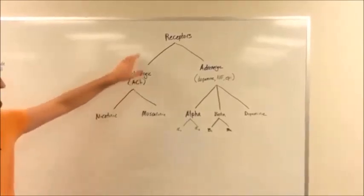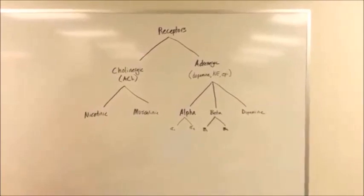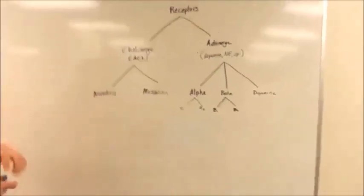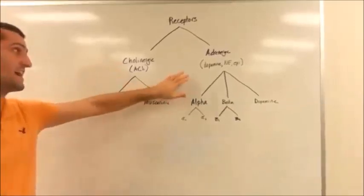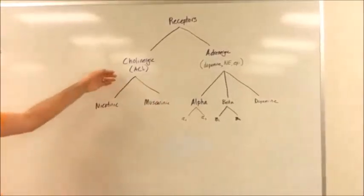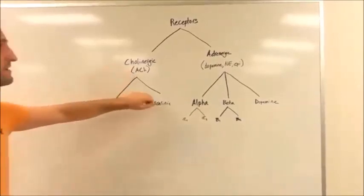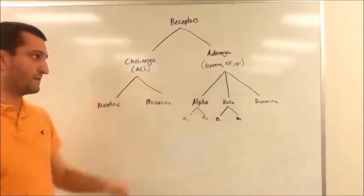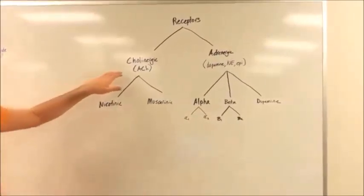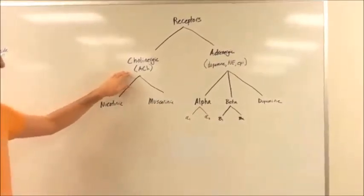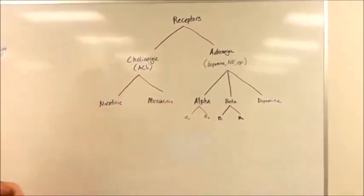Here we're going to talk about the different types of receptors. When we talk about any type of receptor, it's important to know what category it's going to fall into. There are two main categories: the cholinergic receptors and the adrenergic receptors. All the cholinergics are going to deal with acetylcholine, and all the adrenergics will deal with everything else, such as dopamine, norepinephrine, and epinephrine. We'll go through the synthesis of both acetylcholine and dopamine, norepinephrine, and epinephrine in a different video.